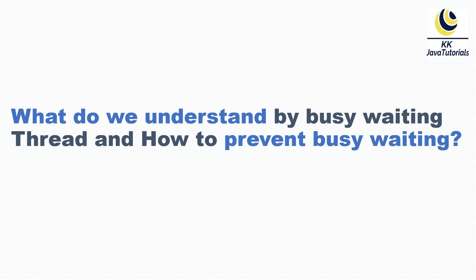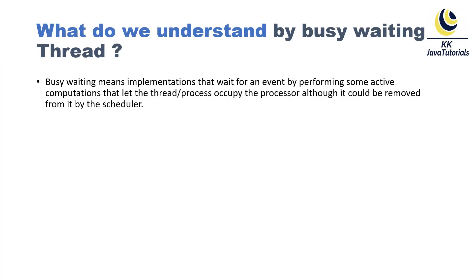Let's try to understand the concept and we'll see an example as well. When we talk about busy waiting thread, busy waiting means implementations that wait for an event by performing some active computations that let the thread or process occupy the processor, although it could be removed by the scheduler. Sometimes a thread is not doing any meaningful task and is basically busy for nothing.